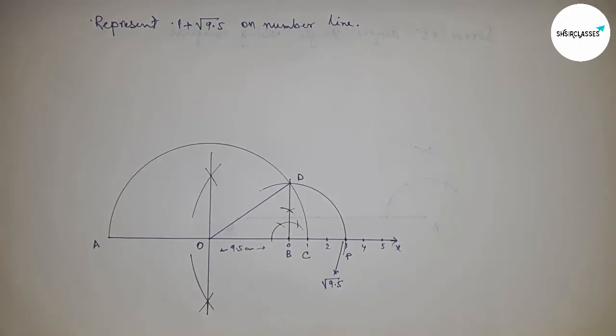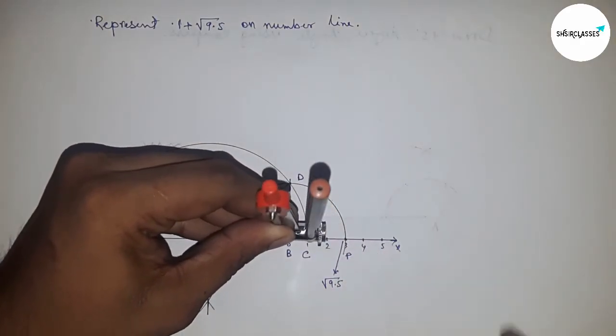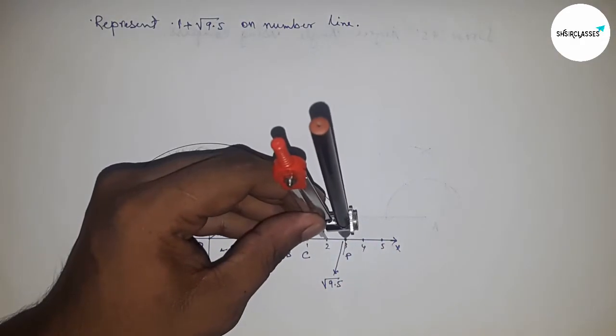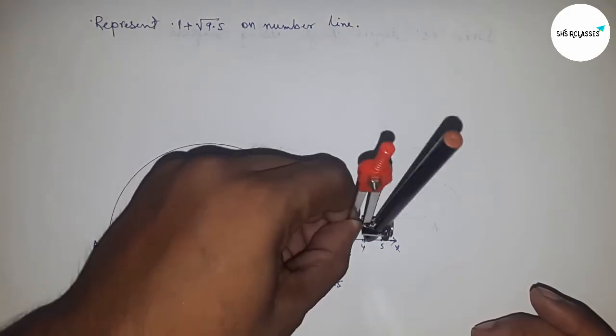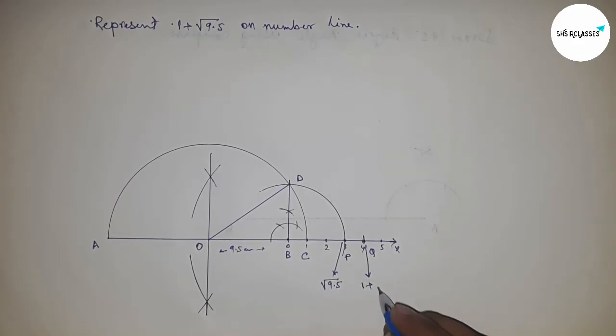Next, we have to draw 1 plus root 9.5, so we add an extra 1 here. This is point Q, and this is the representation of 1 plus root 9.5.